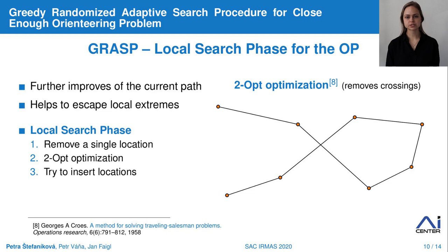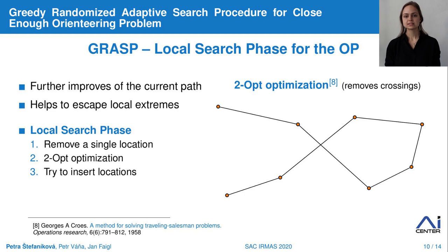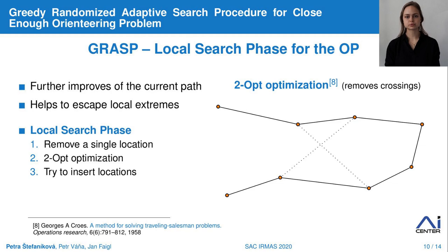When no improving path is found in the construction phase, the second part — the local search phase — is executed to further improve the current path. As a first step, a single location is attempted to be removed from the current path to escape from the local extreme. Consequently, the path is shortened by removing crossed segments using two-opt optimization. Since the path might be shorter than the travel budget, we try to insert a new location which may increase the total reward compared to the original path before removing. From all possible combinations, the best improvement is selected. The whole process is repeated until no improvement is found, and thus the final solution has been determined.